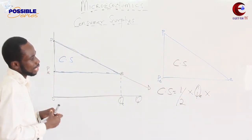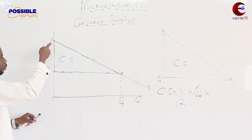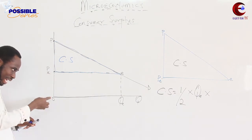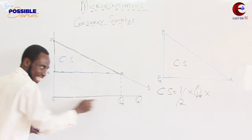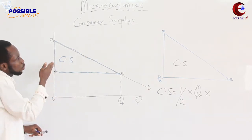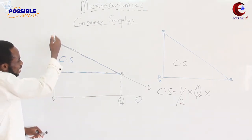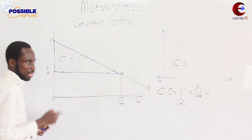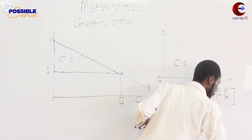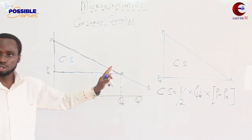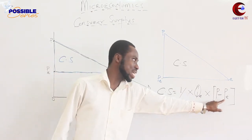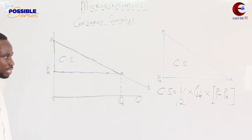The height is from here to here — it is the difference between the highest price and the equilibrium price. The height is P minus PE. So the full formula for calculating Consumer Surplus is: CS = one-half times Equilibrium Quantity times (P minus PE). That is the formula for calculating Consumer Surplus.